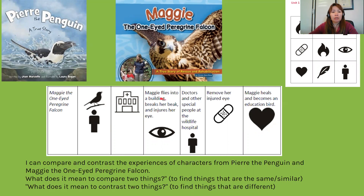So let's quickly review what happened in Maggie the One-Eyed Peregrine Falcon. As you guys know, Maggie flies into a building and breaks her beak and injures her eye. Doctors and other special people at the wildlife hospital help Maggie, and they remove her injured eye.